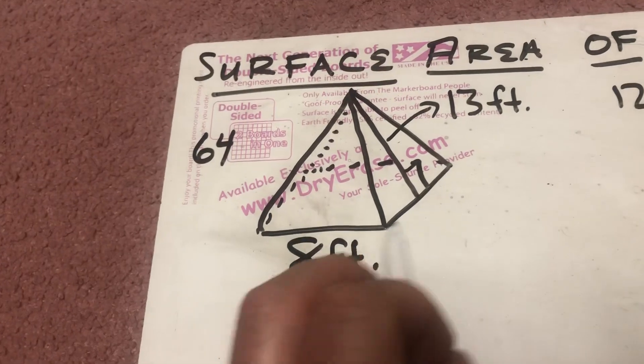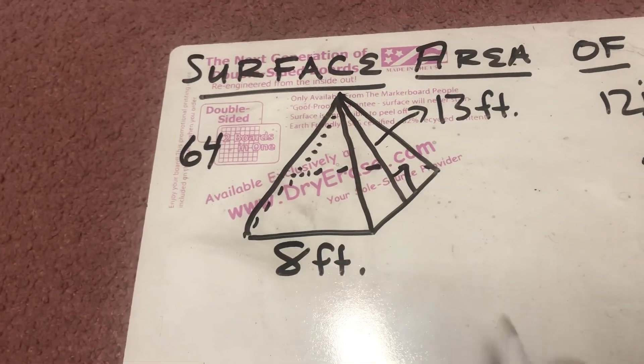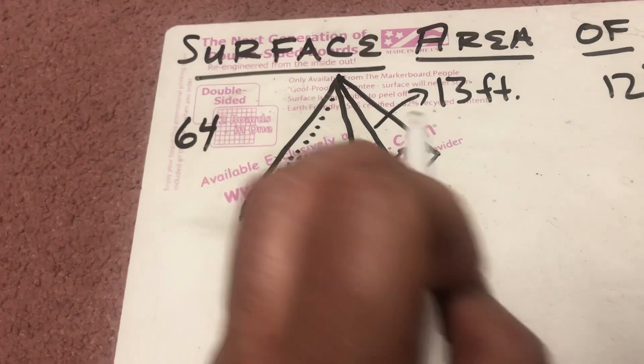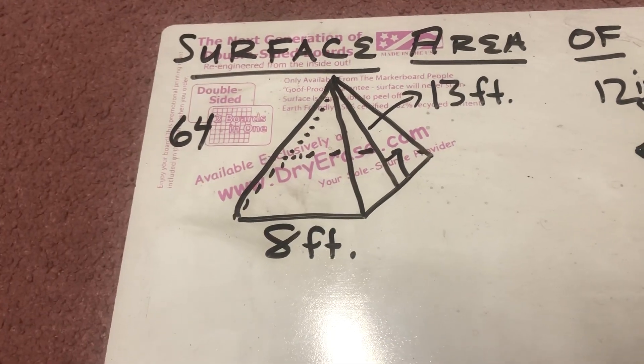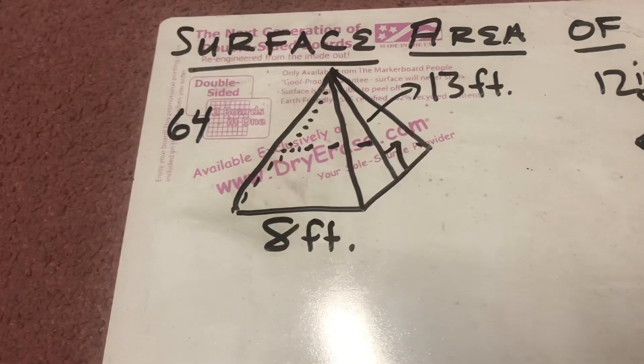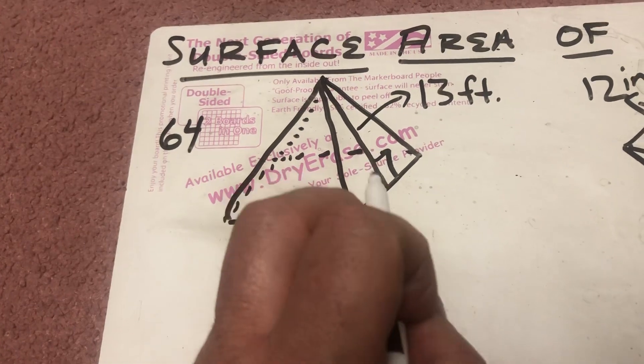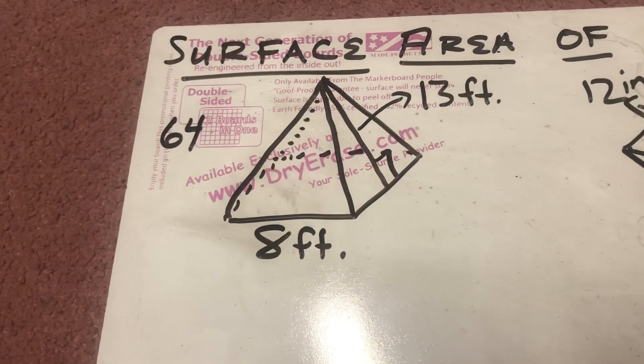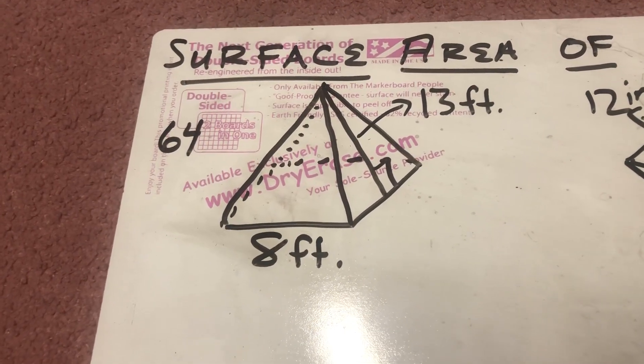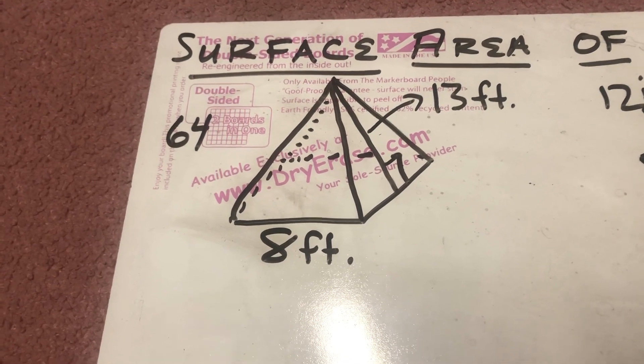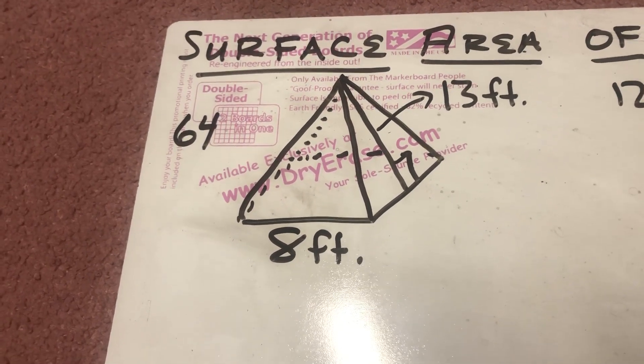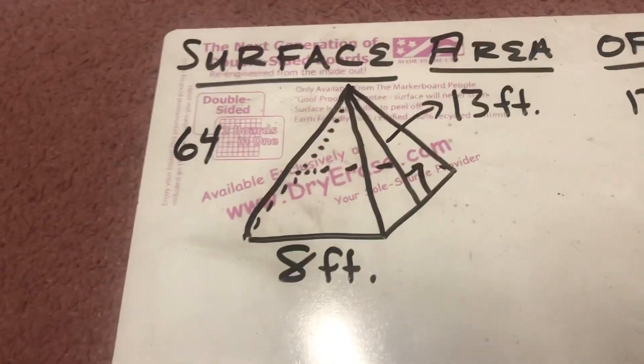Now, since this is a square, what we know about these triangles is that all four of them are the same size. There's one triangle coming up from each side, and so all four of them are the exact same size. I don't need to figure out four individual triangles. I can figure out the area of one triangle, and then multiply that by four.